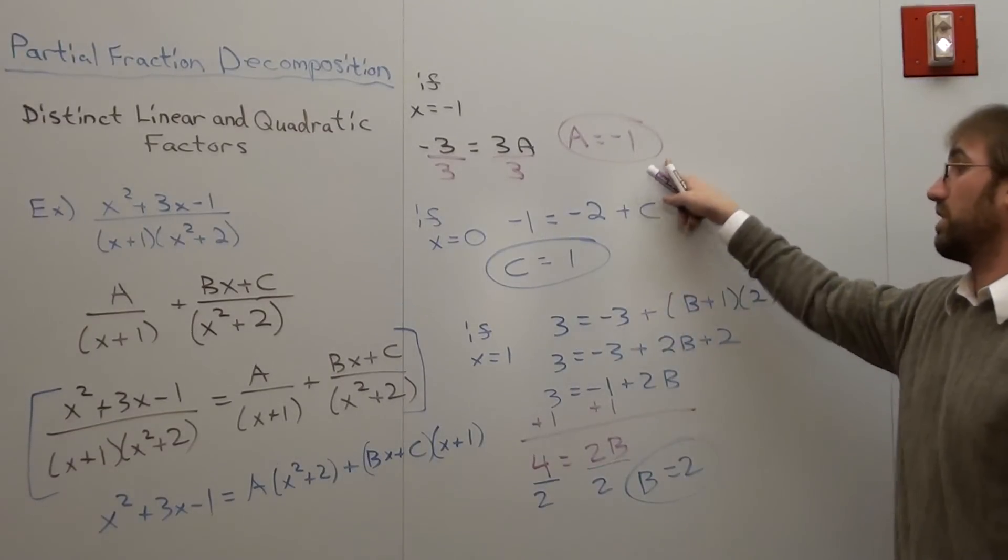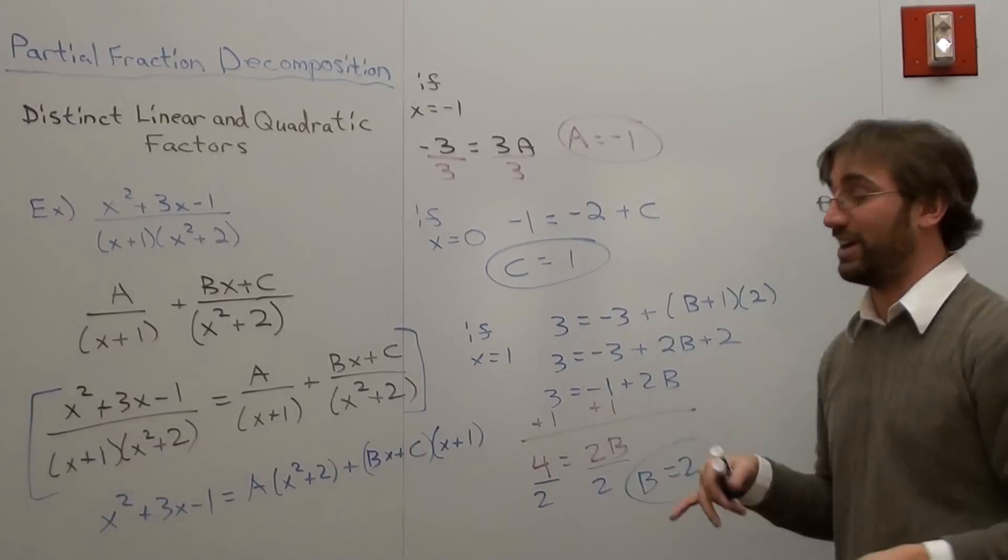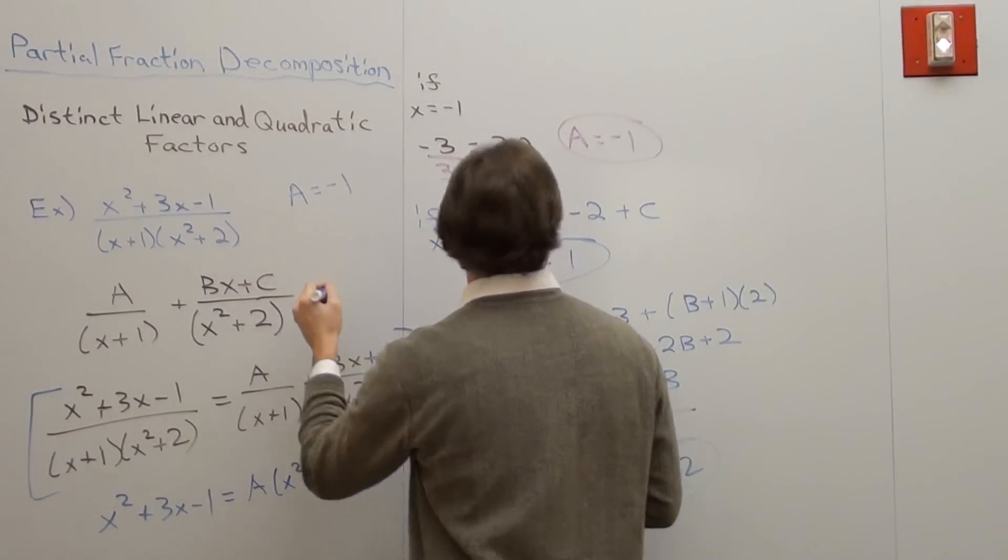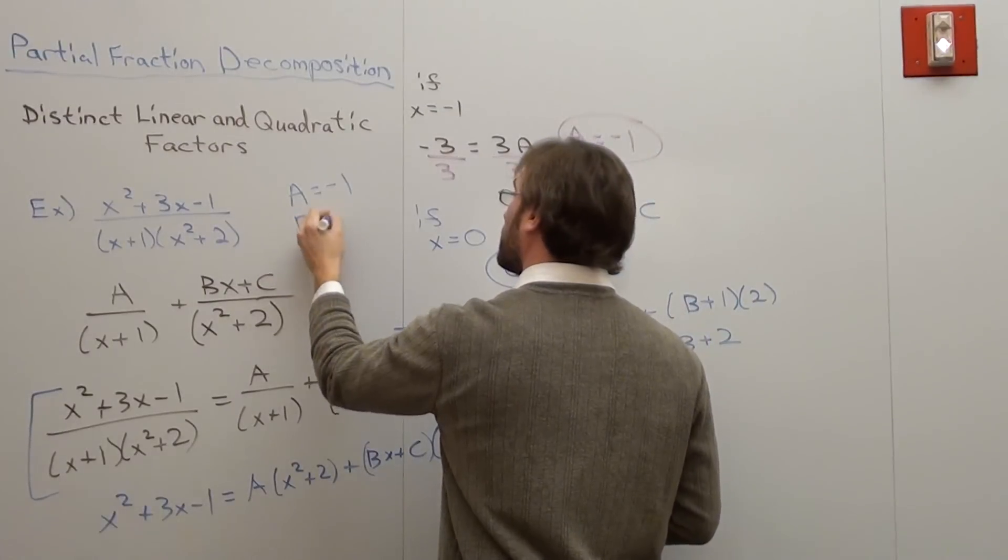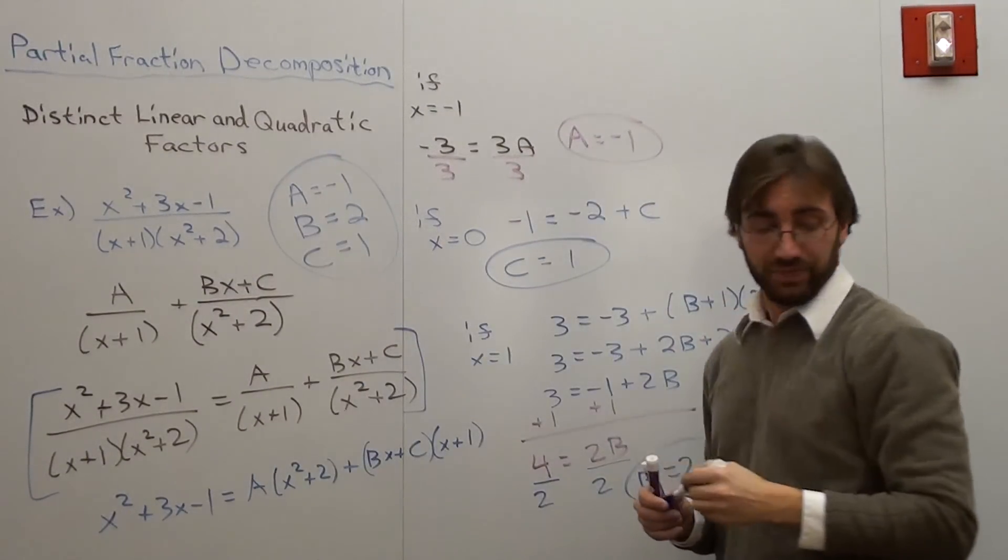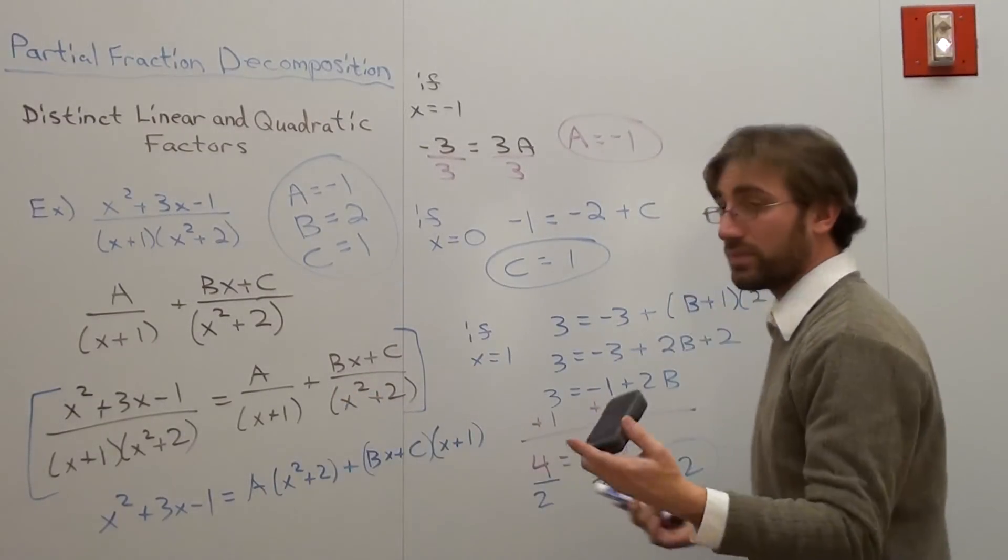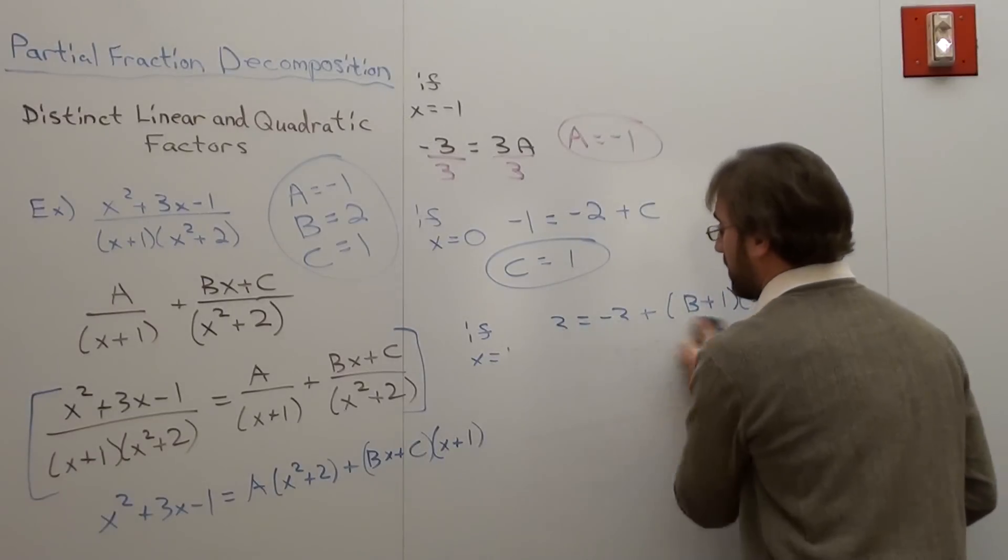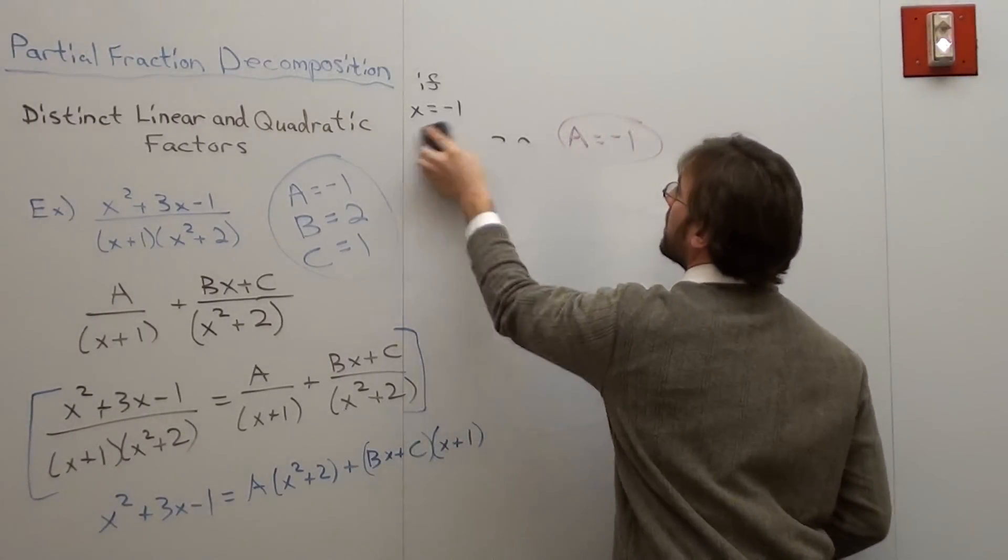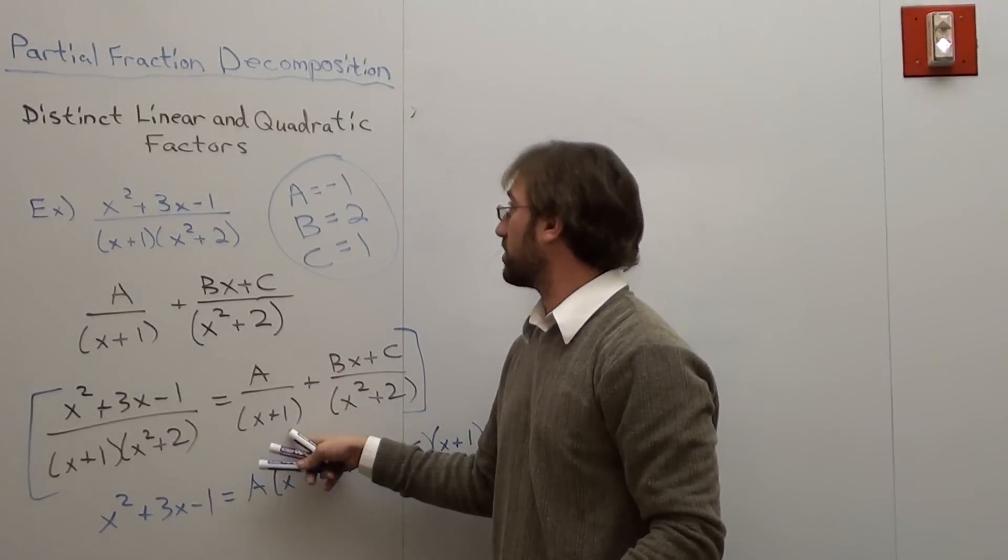b equals 2. So b equals 2, c equals 1, a equals negative 1. Let me go ahead and write that down really quickly before I erase it like I did last time. a equals negative 1, b equals 2, c equals 1. So those are my values. When I go ahead and I substitute it back into this problem right here, which is essentially what I'm going to do.